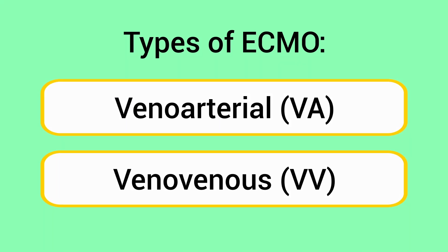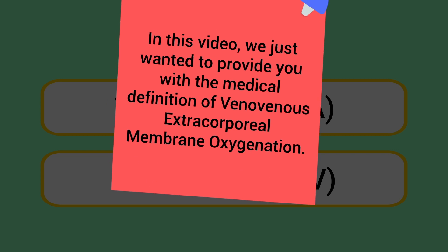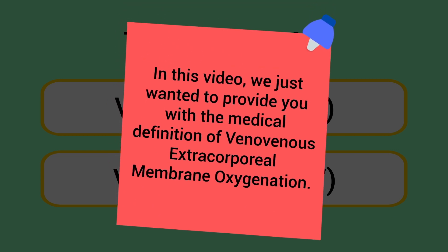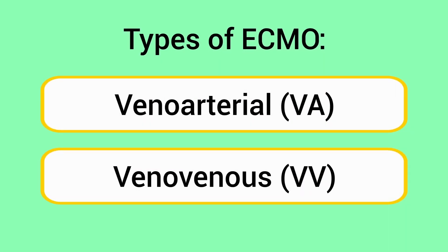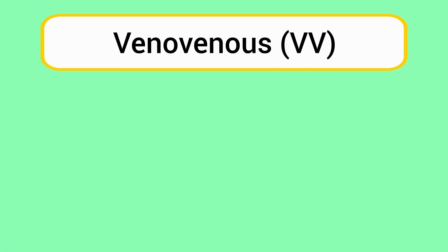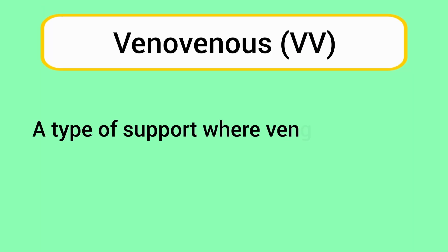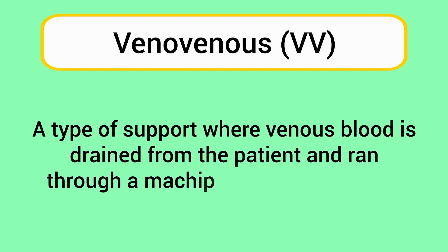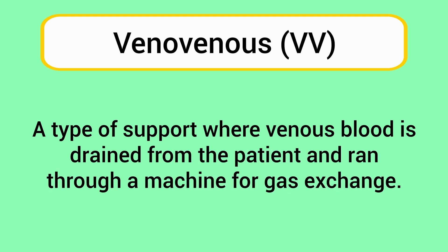The two most common types of ECMO are veno-arterial and veno-venous. In this video, we provide the medical definition of veno-venous extracorporeal membrane oxygenation. Veno-venous ECMO is a type of support where venous blood is drained from the patient and run through a machine for gas exchange.